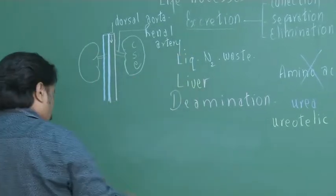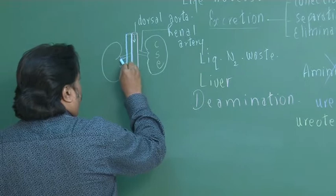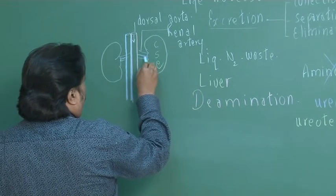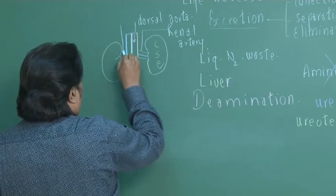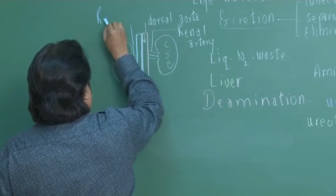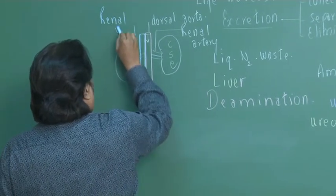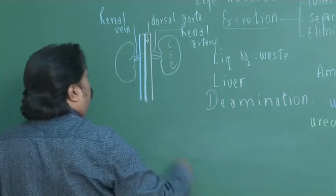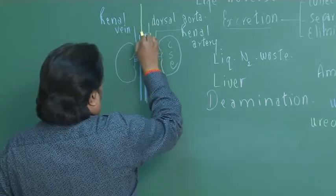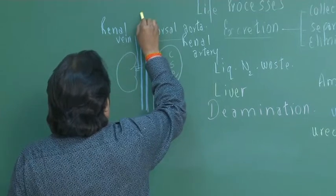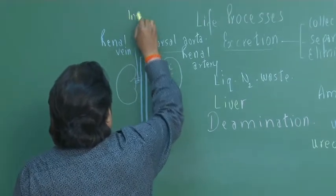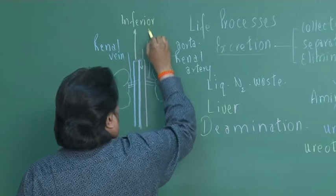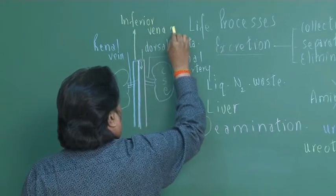This blood vessel which I have drawn just now, which will be carrying blood away from the kidney, that is referred as the renal vein. Now, this will be the blood vessel carrying blood away, that is the inferior vena cava.